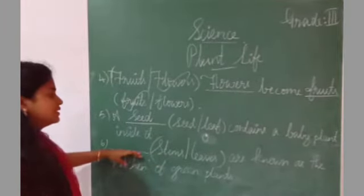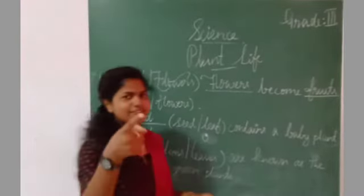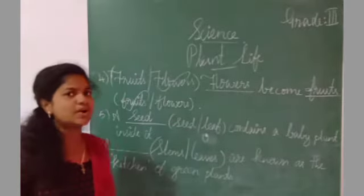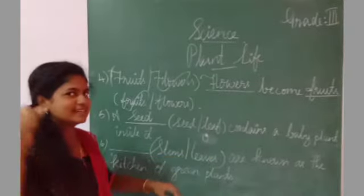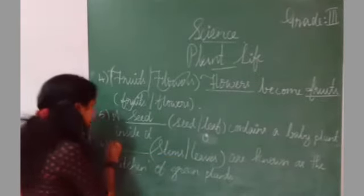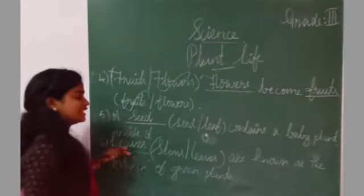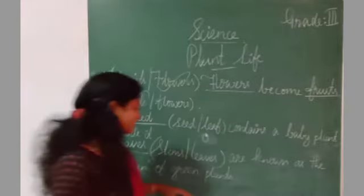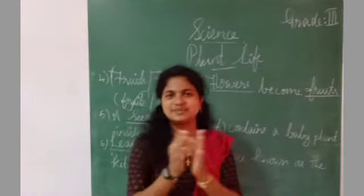Next one: Dash are known as the kitchen of green plants. Tell me. Yes, it's correct. Yes. Stem? Leaves. Leaves, L-E-A-V-E-S. Yes, leaves are known as the kitchen of green plants. Very good, my dear children. You answered well. All of you, open your student's book.